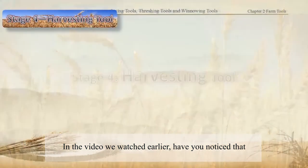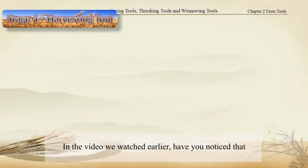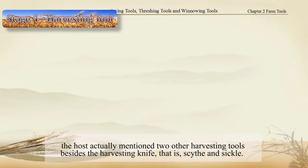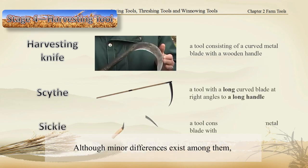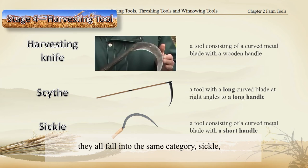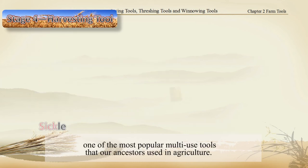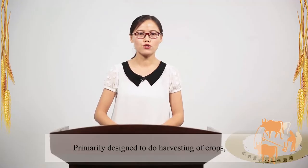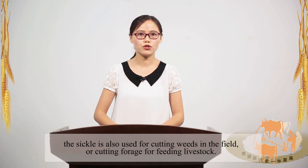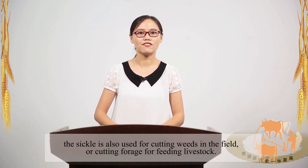In the video we watched earlier, have you noticed that the host actually mentioned two other harvesting tools besides the harvesting knife? That is scythe and sickle. Although minor differences exist among them, they all fall into the same category — sickle — one of the most popular multi-use tools that our ancestors used in agriculture. Primarily designed for harvesting crops, the sickle is also used for cutting weeds in the fields or cutting forage for feeding livestock.